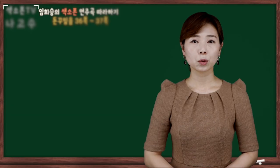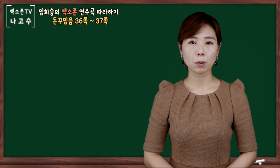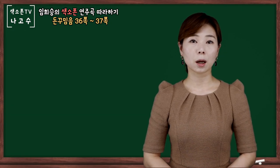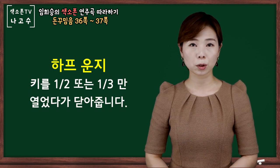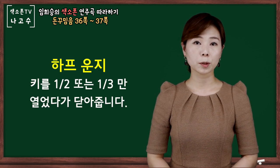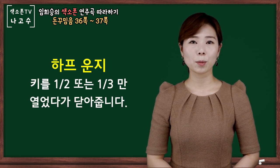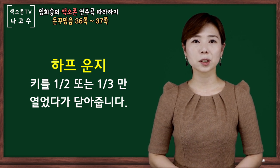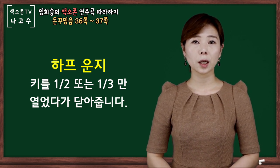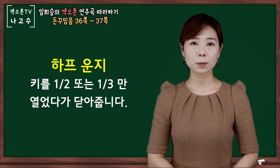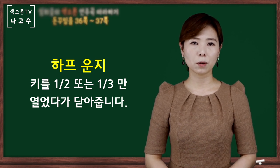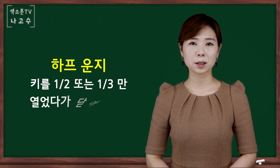돈 꾸밈음 1번으로 원음에서 2도 상행했다가 다시 원음으로 돌아와줄 때에는 프랄트릴러 꾸밈음, 잔결 꾸밈음이었죠. 이때 하프 훈지를 적용하시고 뒤에 반음 짧은 앞 꾸밈음을 자연스럽게 연결해서 연습하시면 되겠습니다.